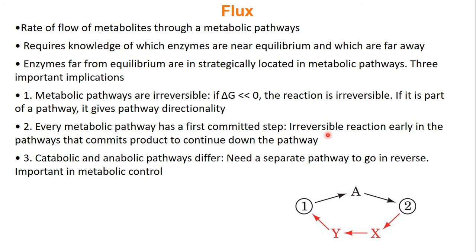Every pathway has a first committed step. Usually early on in a metabolic pathway, there is one enzyme that is very irreversible — delta G is super negative — and once you pass that enzyme, your metabolite can't go back anymore; it is destined to go through the metabolic pathway. Because we have these irreversible steps, if we do need to go backwards there must be a separate reverse path. For example, going from metabolite 1 to metabolite 2 goes through enzyme A, but since enzyme A is irreversible, we can't go back directly; instead we need two new enzymes, X and Y. The forward path and the reverse path are unique and different — that's all because we have enzymes that are irreversible.